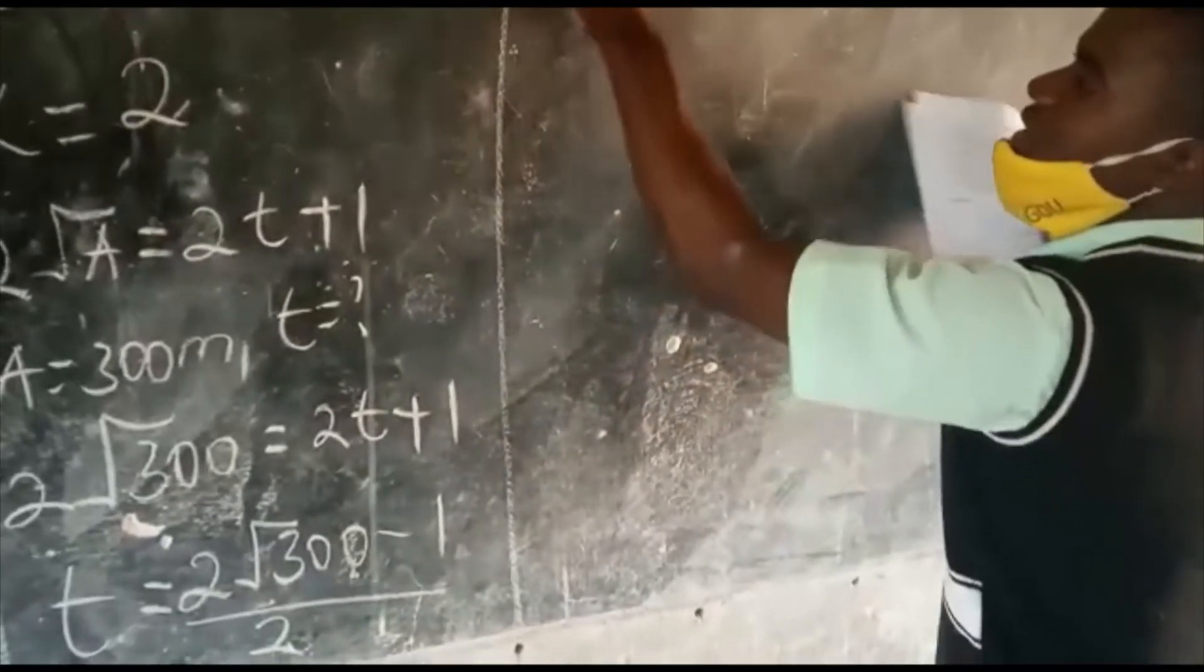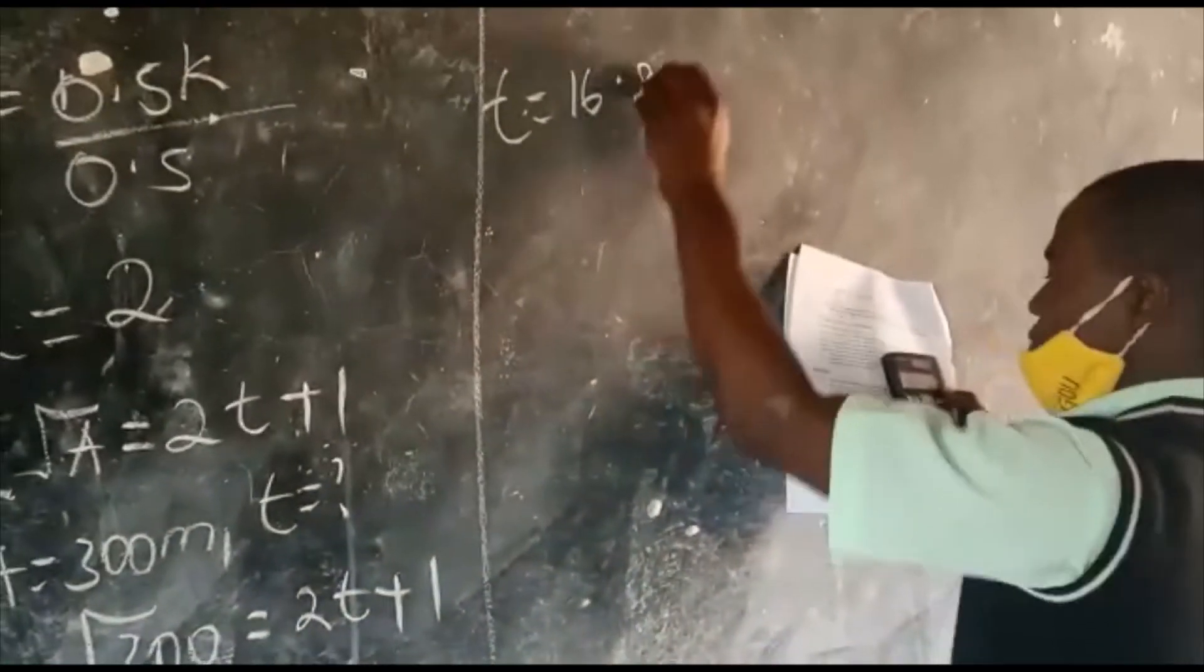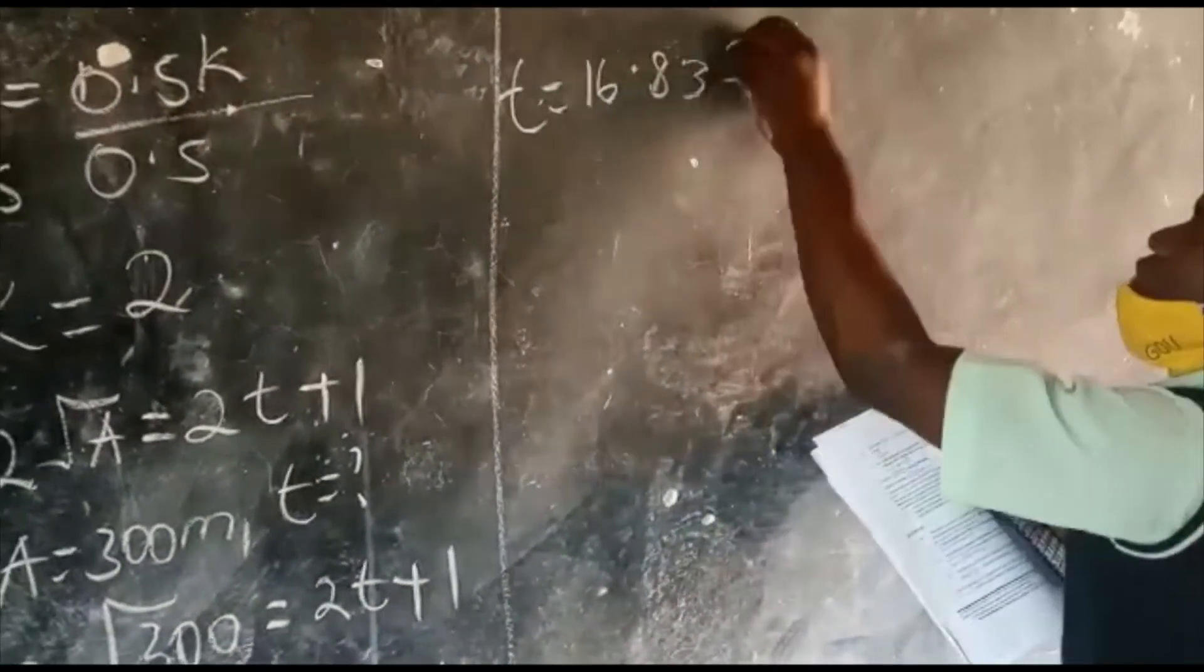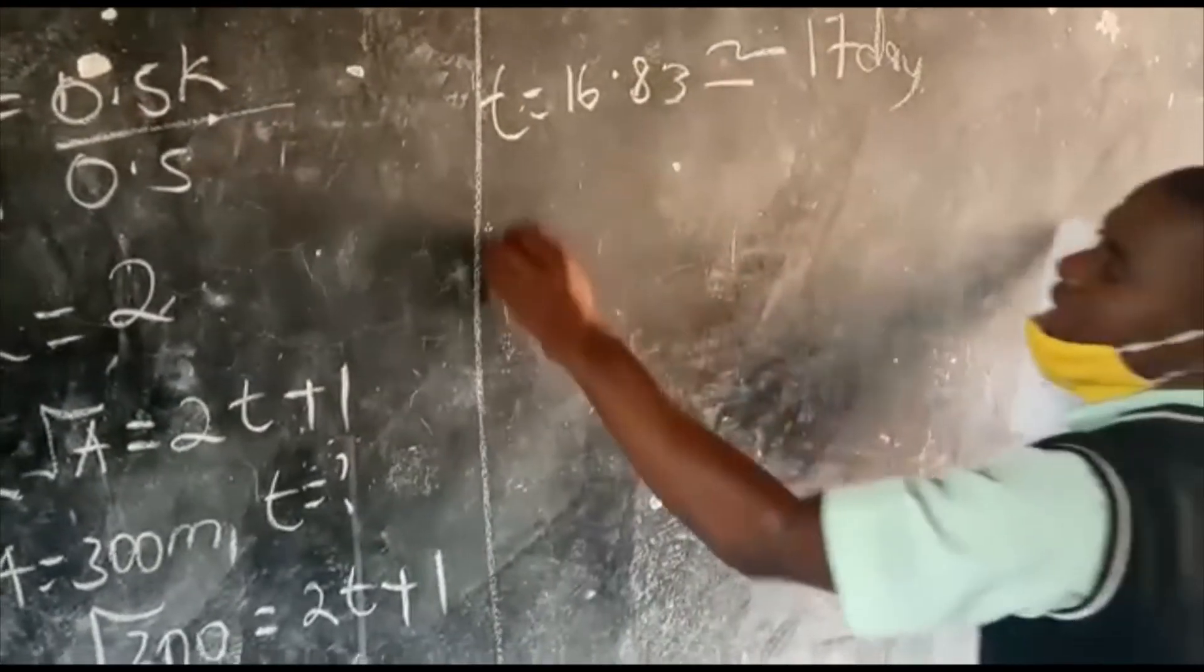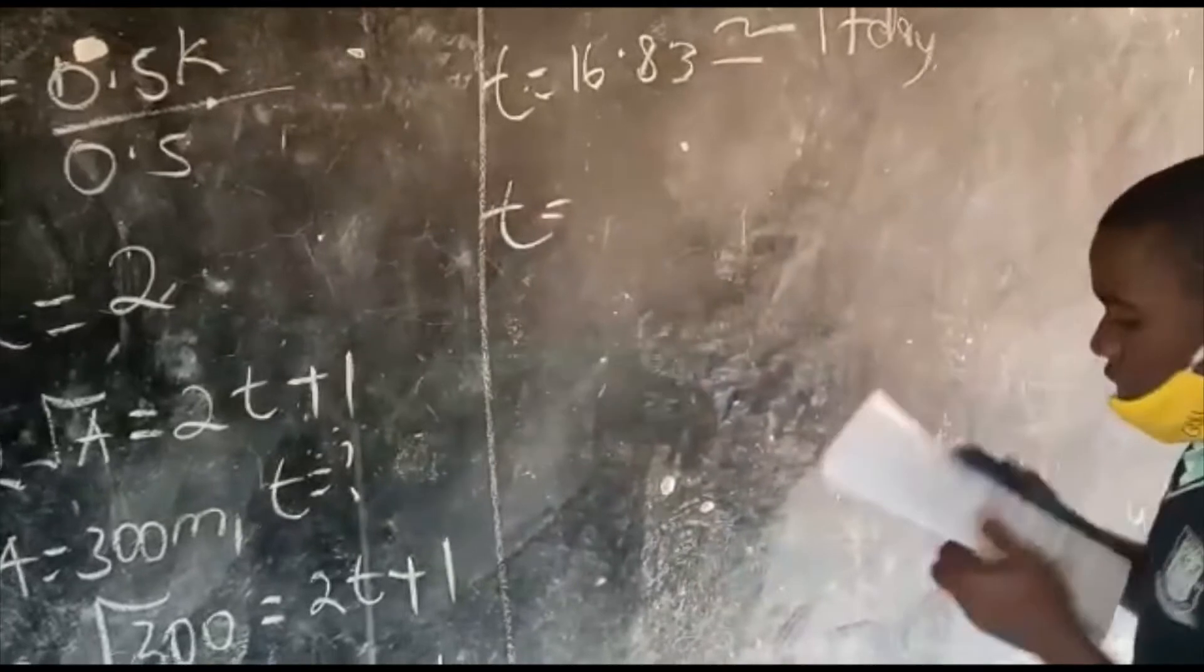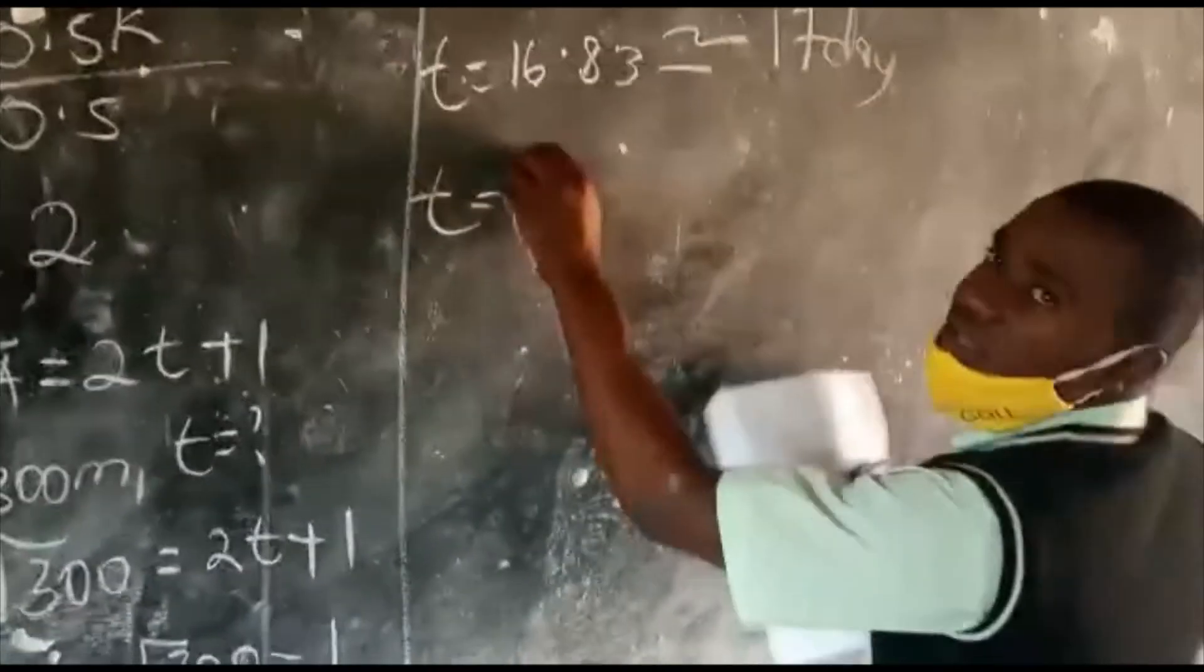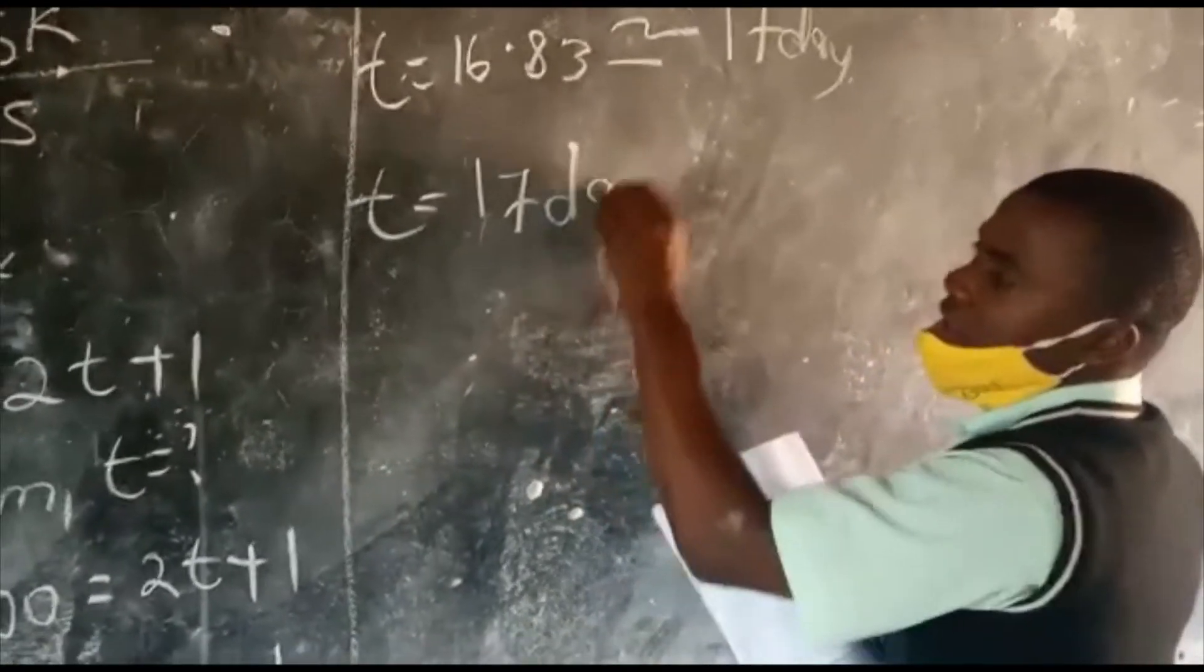So, my value for T is 16.83, which is approximately 17 days. So, my T, which is the time, to the nearest day is 17 days.